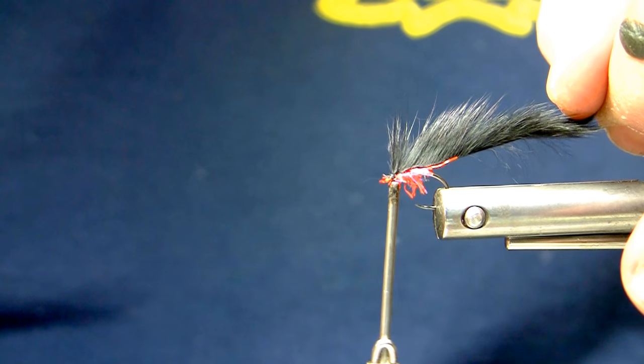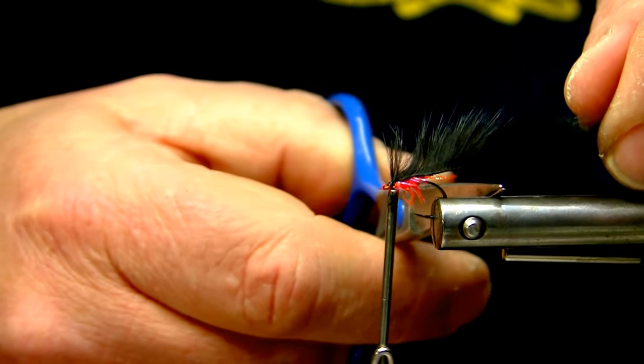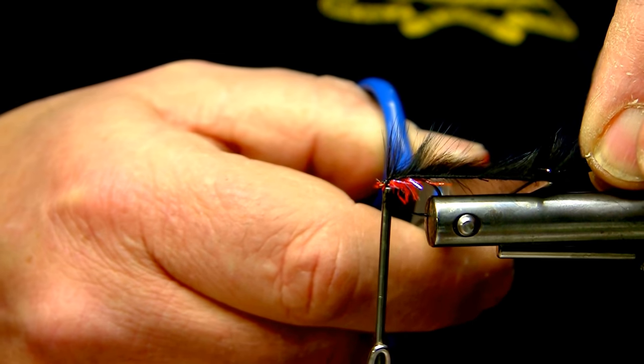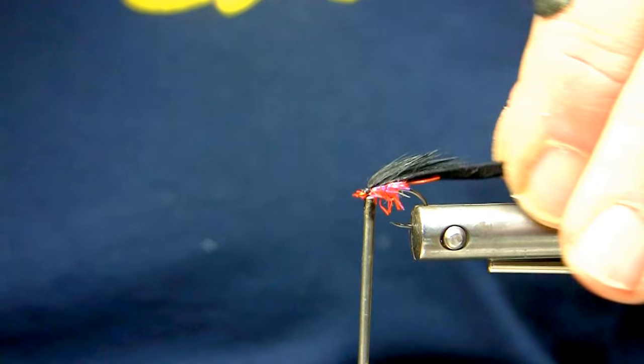And I'll cut the wing length about three times the hook shank length. So if we go once, twice, just stick the scissors in against the skin. You can see we just have a nice little wing.